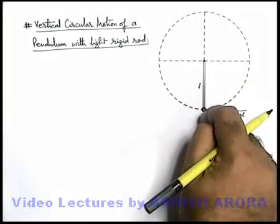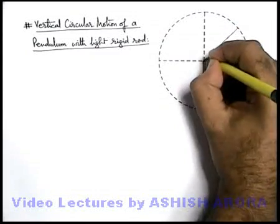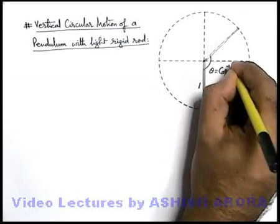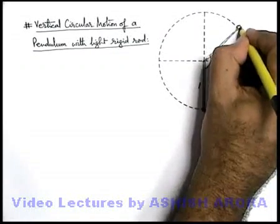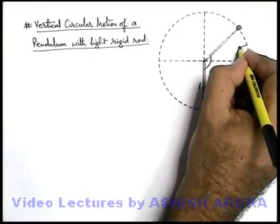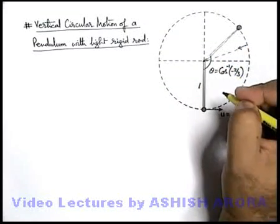If it was a string, then we know well that at a particular position at an angle theta is equal to cos inverse of minus 2 by 3, the tension in the string becomes zero. Till this point, the tension was providing the centripetal force, because of which the bob was continuing the circular motion.